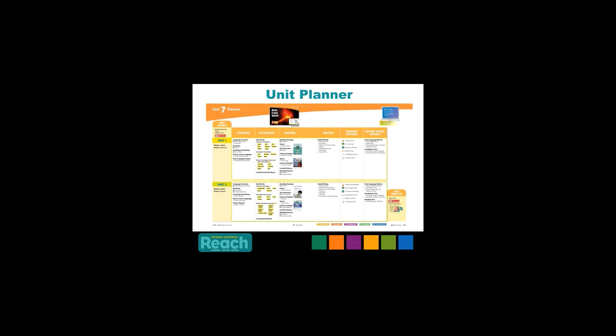To help with lesson planning, another useful tool in your Teacher's Edition is the unit planner. This planner from Unit 7 in the Grade 3 Teacher's Edition shows the unit launch on the left and the unit wrap-up in the lower right. You can see all the specific skills for each part — language, vocabulary, reading, writing, along with learning stations and review assessment. These planner pages highlight the specific skills you will teach, along with those that are tested. Each time you see a black circle with a white T, that means it's a tested skill.